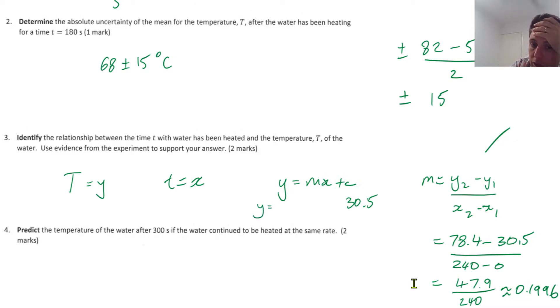So Y equals 0.1996 X plus 30.5 as our starting temperature. It is a linear relationship.